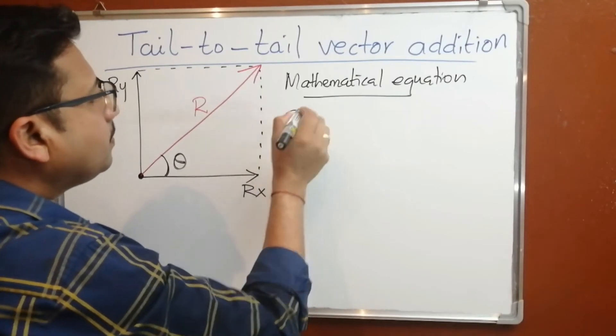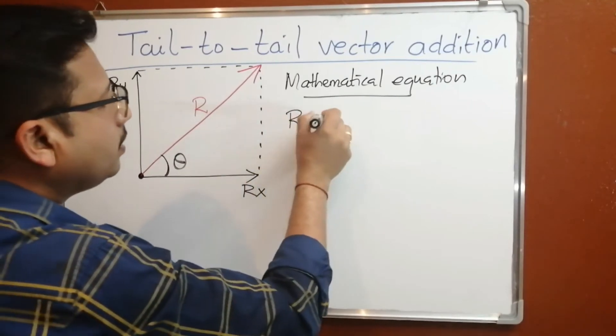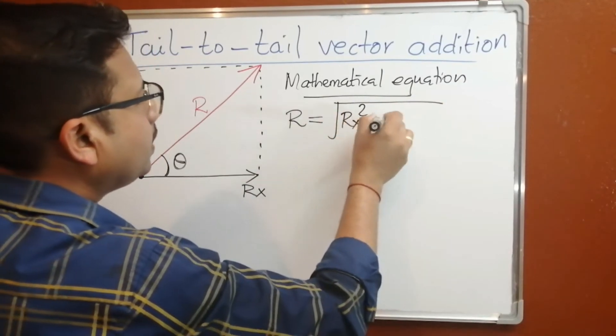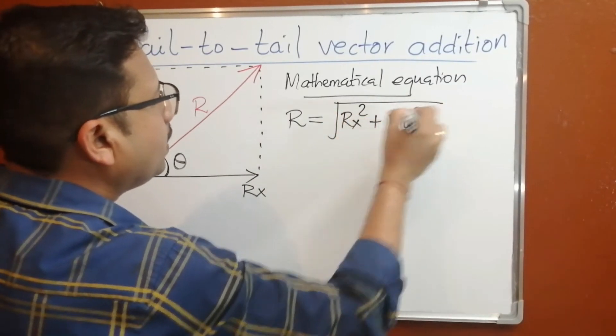The equation is resultant vector r equals square root of r-x squared plus r-y squared.